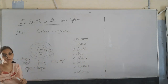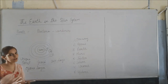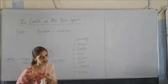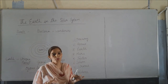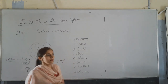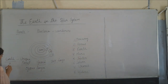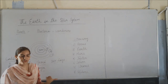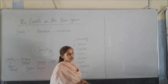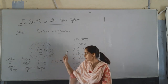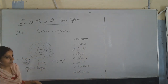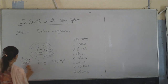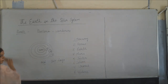Earth is also a unique planet because it is neither too hot nor too cold — we can survive on it very comfortably. All these factors make Earth a unique planet. Earth is also known as the blue planet because 71% of its surface is covered with water, making it look blue from space.